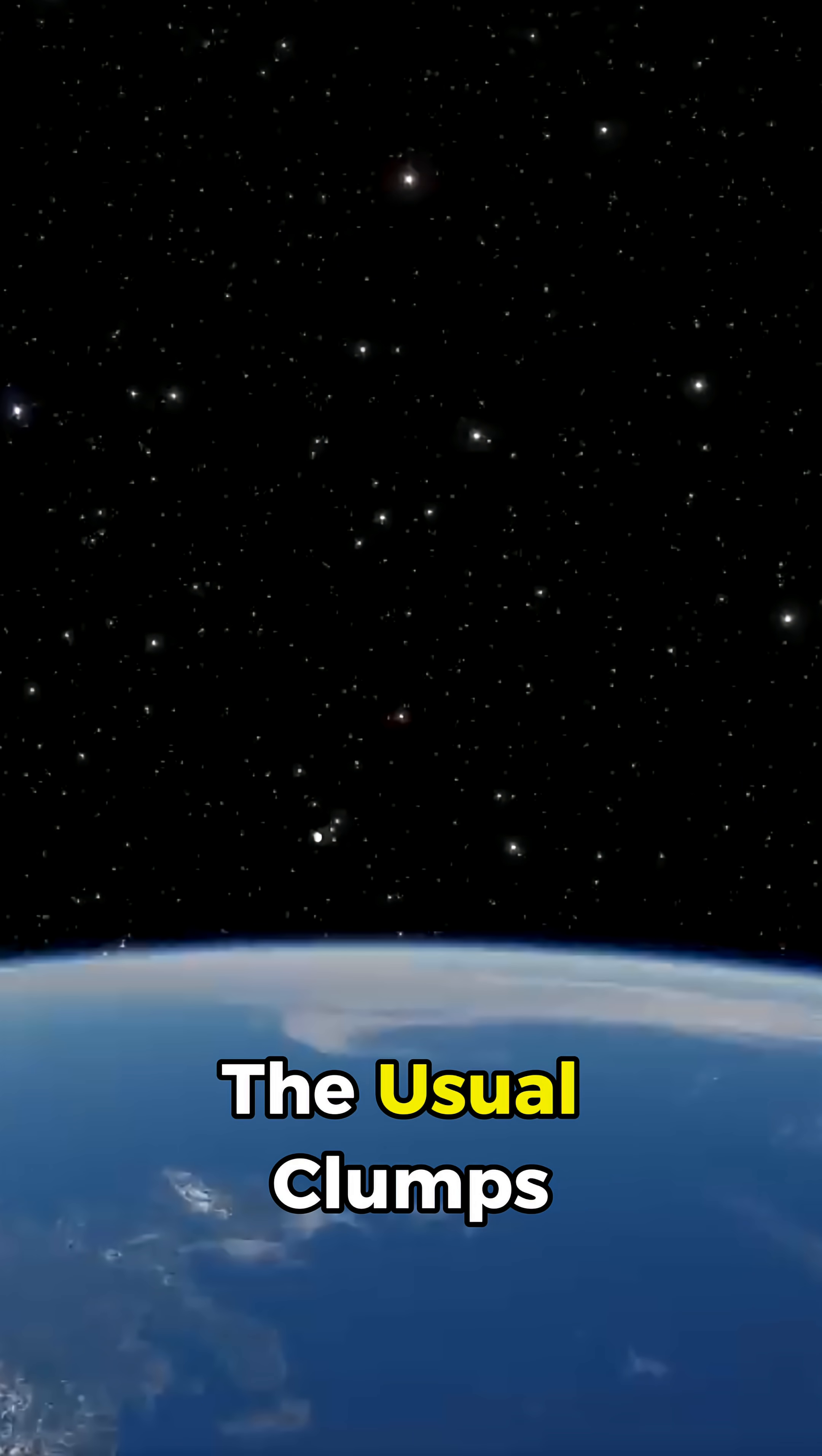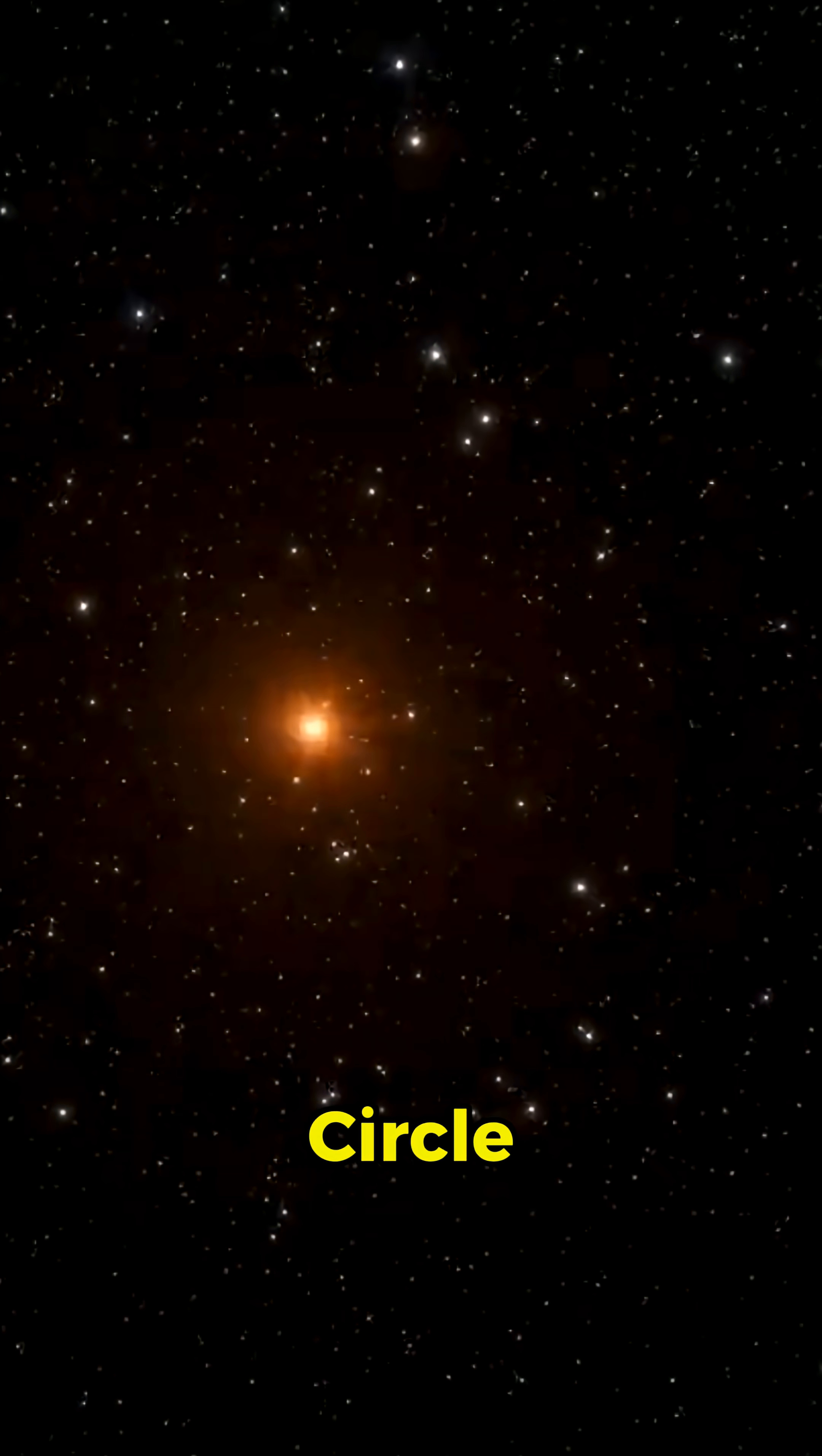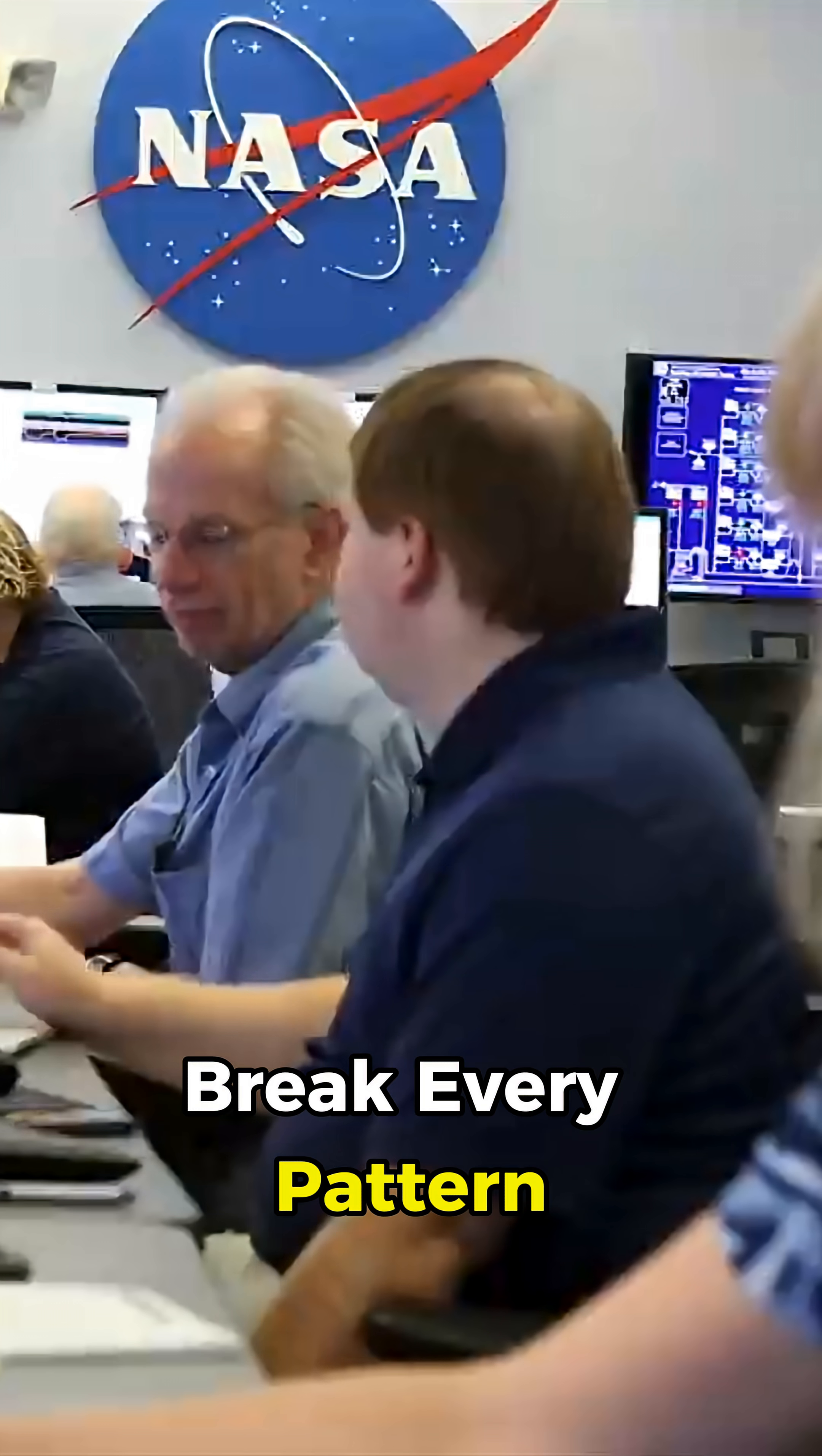Instead of the usual clumps, spirals, or dust clouds you'd expect, this object looks like a flawless circle carved into the universe, and its light is stretched and warped in ways that break every pattern we understand.